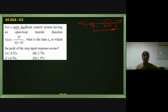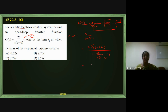Finding the closed loop transfer function using C/R = G/(1+GH): substituting G = 25/[S(S+6)] and H = 1, then simplifying using LCM gives the closed loop transfer function as 25/(S² + 6S + 25).